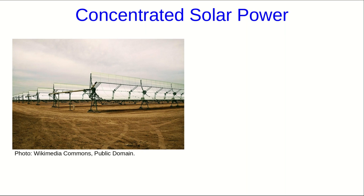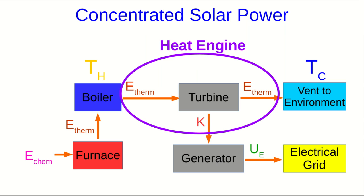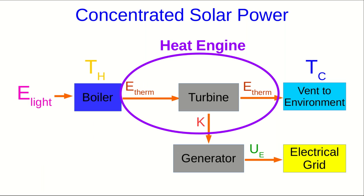One particular setup for concentrated solar power has pipes with fluid flowing through them and parabolic mirrors reflecting sunlight onto them to heat up that fluid, which is then used as the hot reservoir for a heat engine. Another type is a tower, where arrays of mirrors reflect sunlight up to a central tower that also has fluid flowing through it to run a heat engine. More or less, all setups share the feature that mirrors concentrate light onto a fluid to heat it — and from that point on, it's a thermal power plant, just like a fossil fuel plant, except we're converting light energy into thermal energy instead of chemical energy.